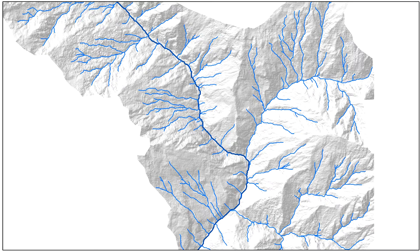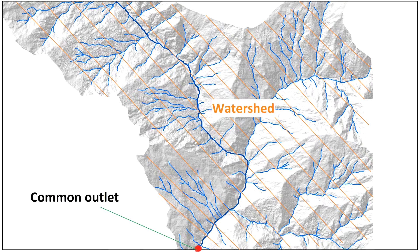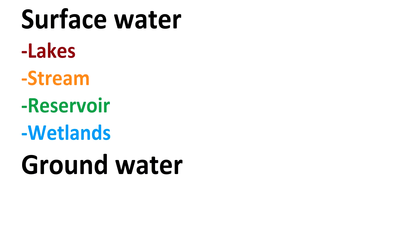USGS explains watershed as an area of land that drains all the streams and rainfall to a common outlet, such as the outflow of a reservoir, mouth of a bay, or any point along the stream channel. It acts as a funnel by collecting all the water within the area covered by it and channeling water to a single point. A watershed consists of surface water found in lakes, streams, reservoirs, and wetlands, as well as all the underlying groundwater.